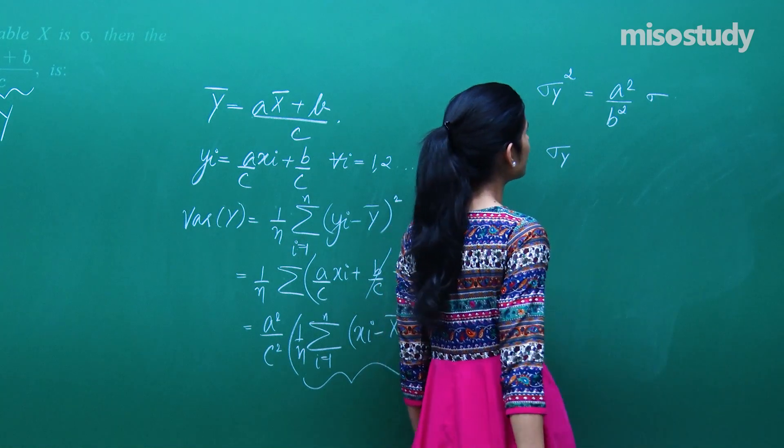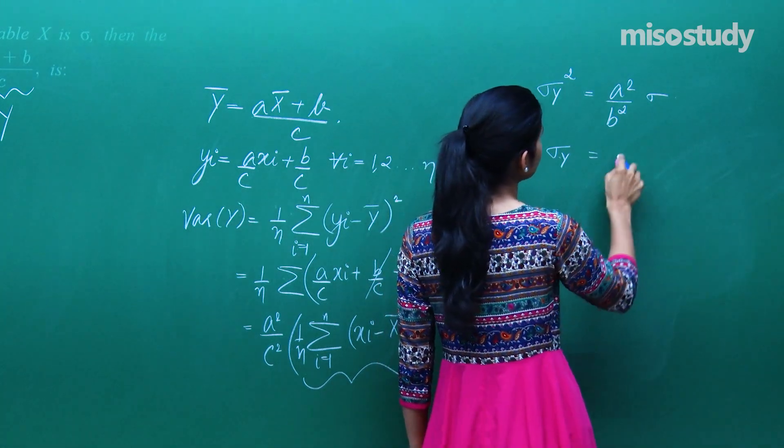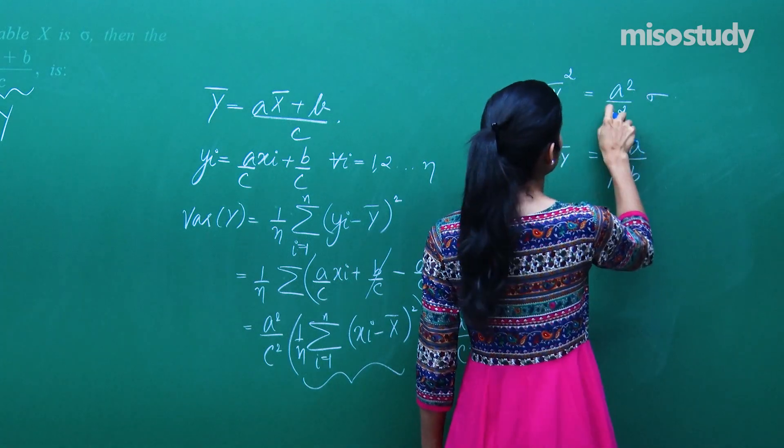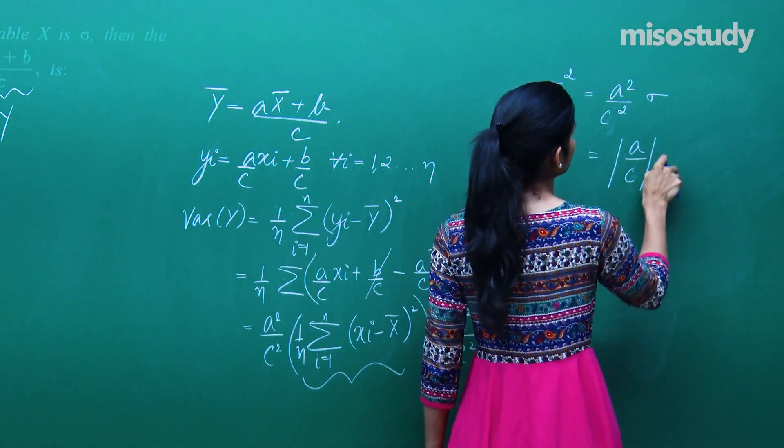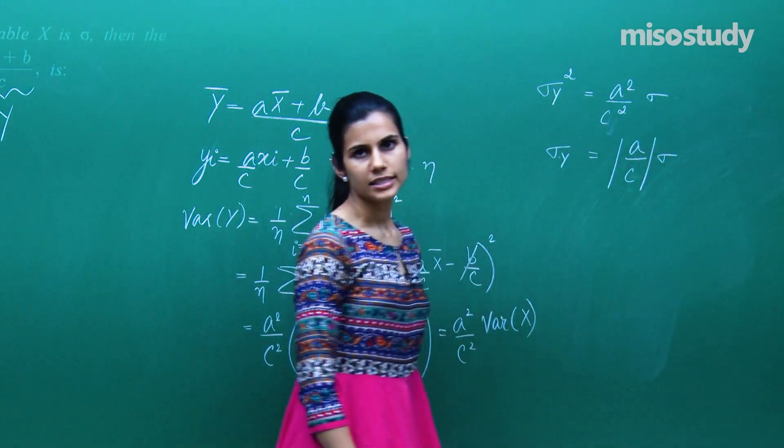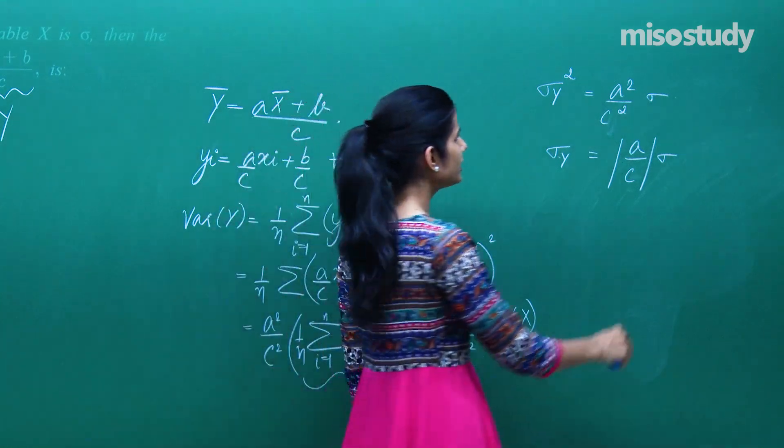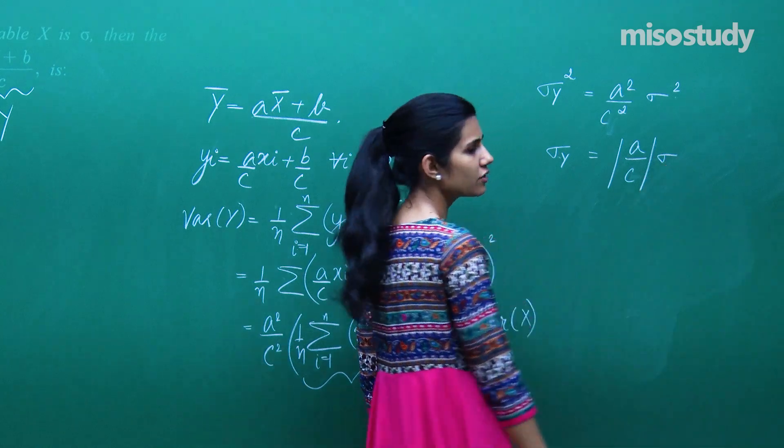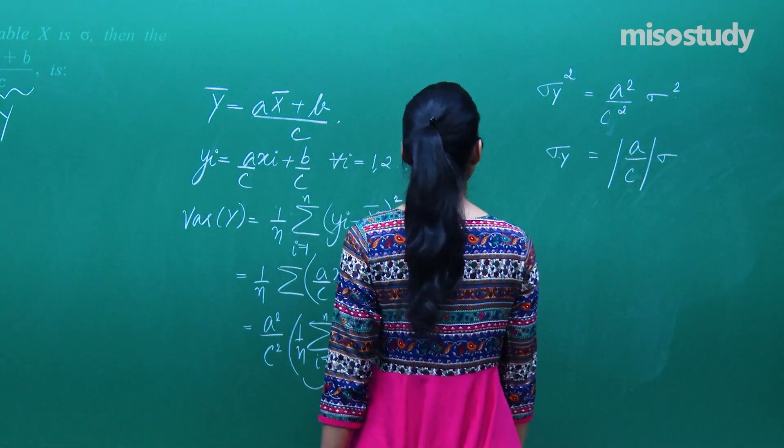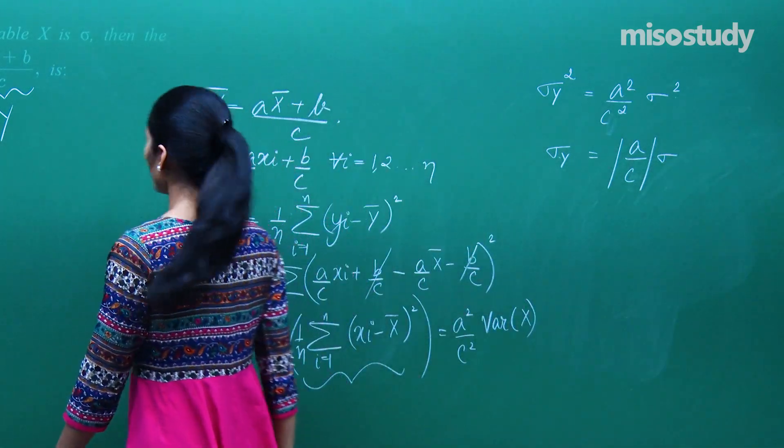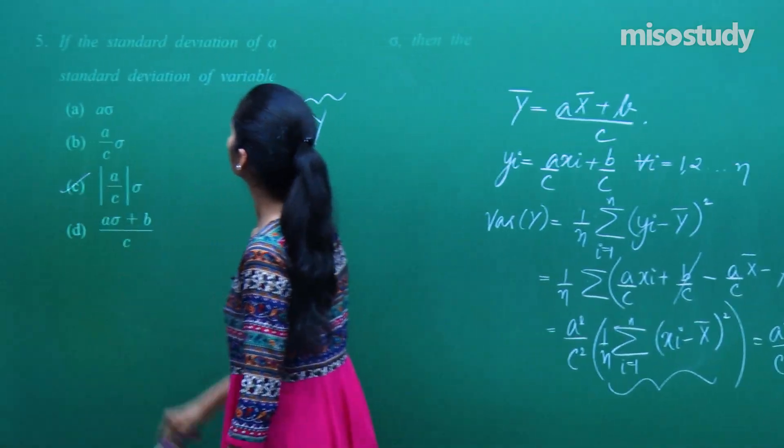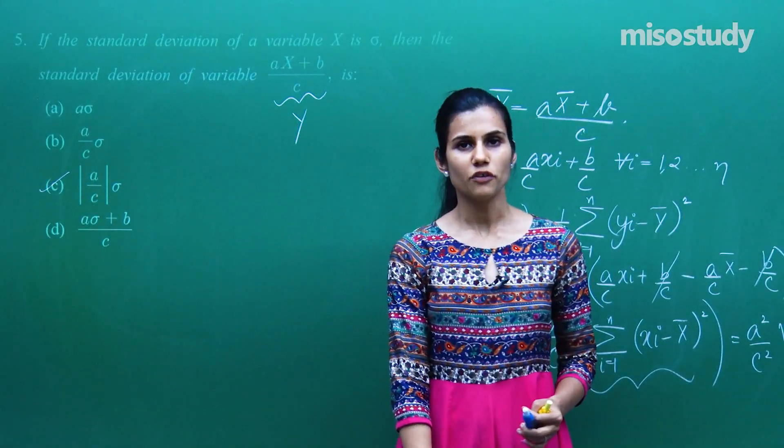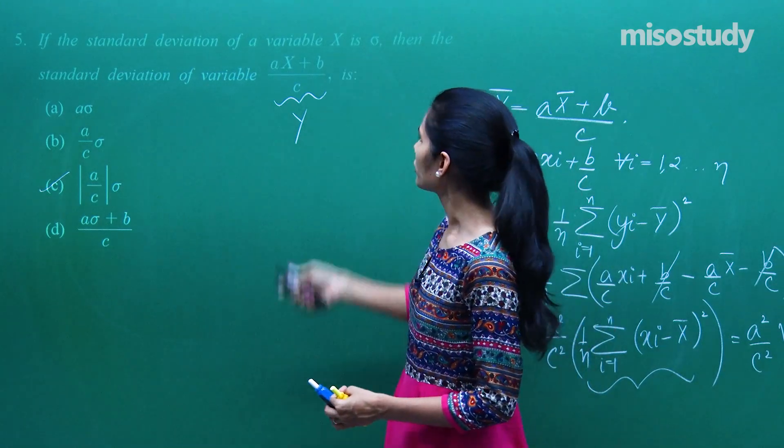So positive square root of this will be the standard deviation. Jisko mein sigma y se denote karu, it will be equal to mod of a by c sigma. This is sigma square because this is variance, so standard deviation will be just sigma. So you have relationship between them is mod of a by c sigma. The standard deviation of variable y is mod of a by c standard deviation of variable x, which is denoted by sigma.